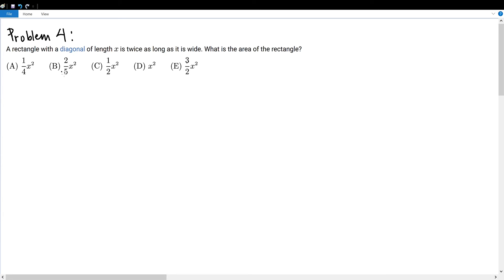It is very important to read this question carefully. Within this, I'll say a little bit of grammar. 'A rectangle with a diagonal length x'—that's a prepositional phrase. 'Is twice as long as it is wide' is referring to the rectangle, not to the diagonal. First of all, always make sure that you get the question right.